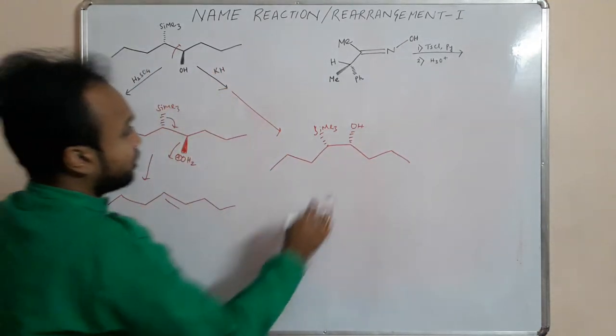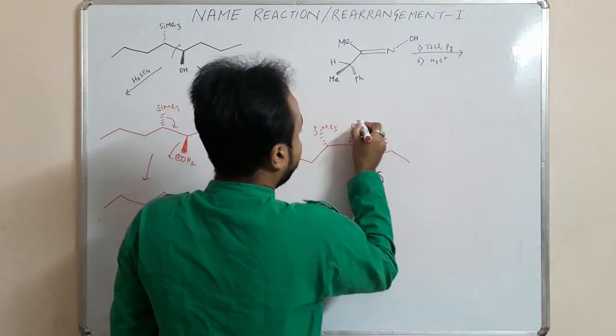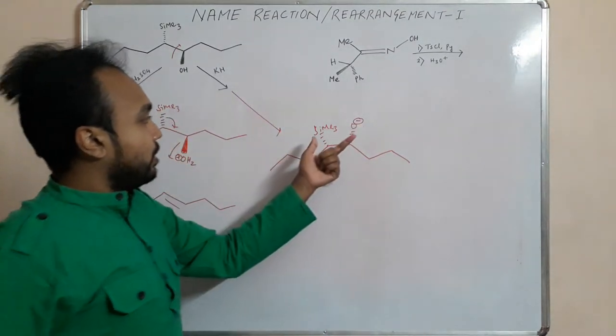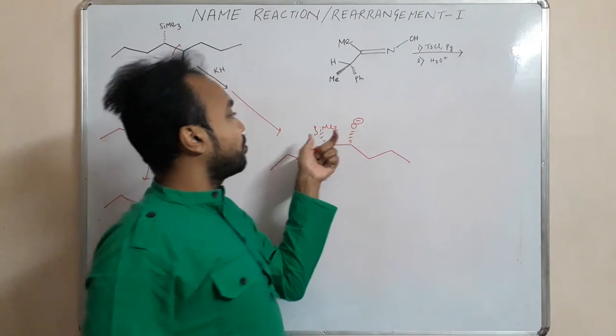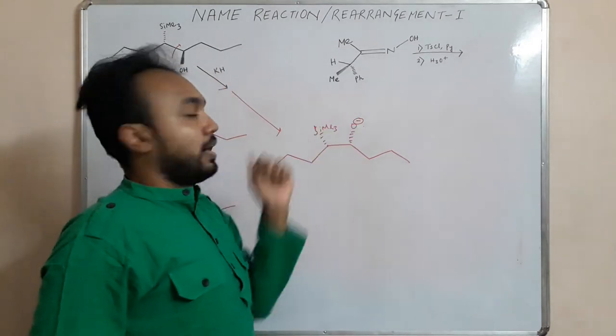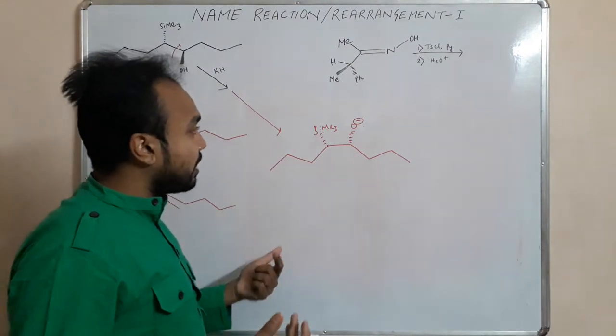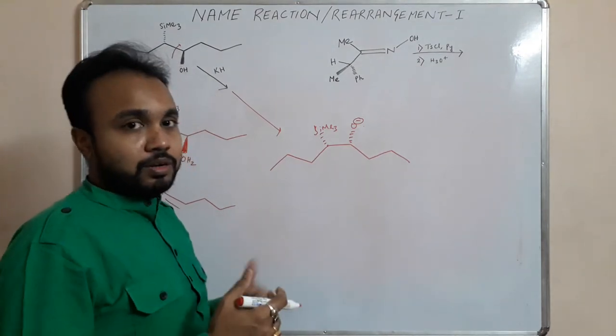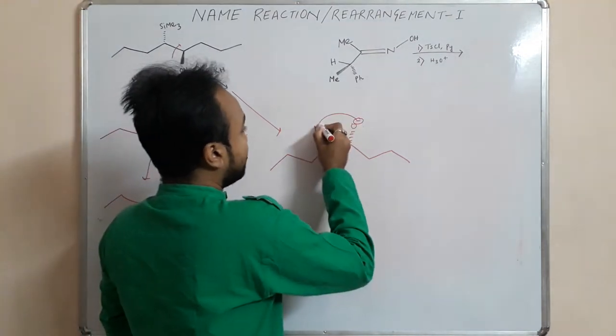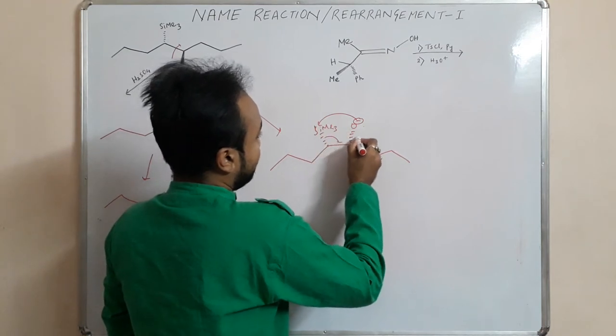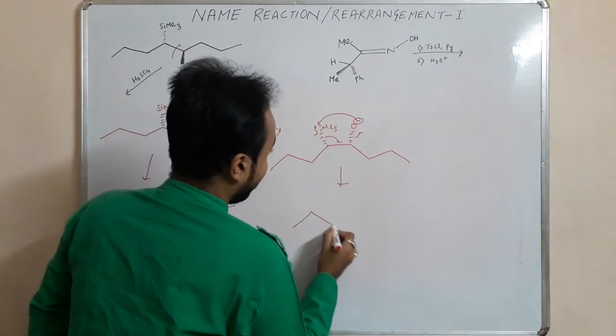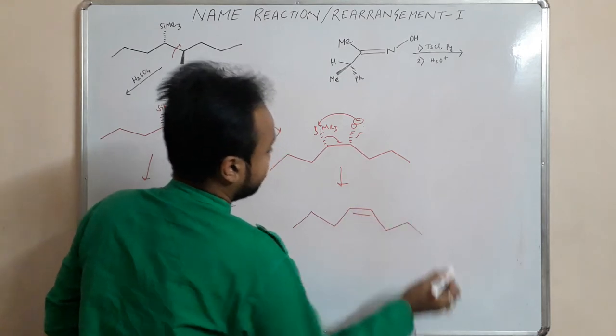Now we are adding a base, so there is a proton abstraction and this oxygen and silicon bond takes place. This oxygen attacks this silicon intramolecularly. So in order to attack, it must have to be in the same plane or same side. So we are ending with a cis isomer.